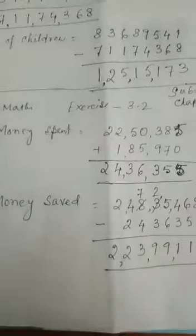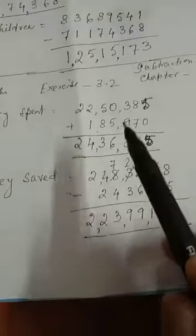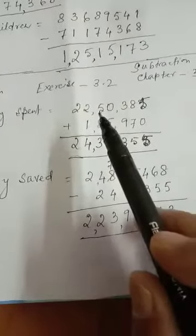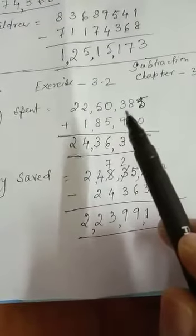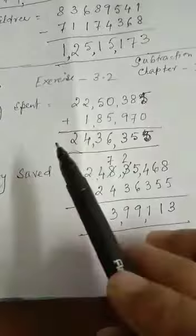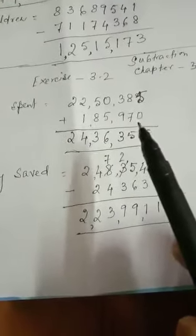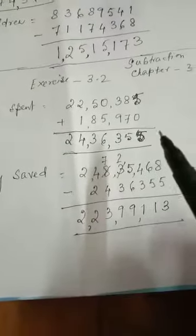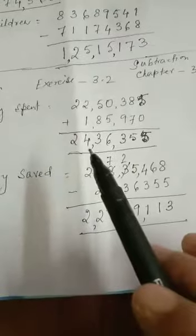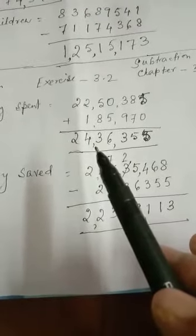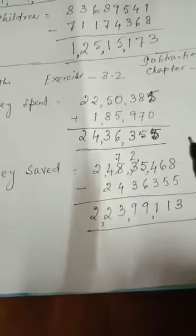Money spent is equal to 22,50,385 plus 1,85,970. So, when you add here, the total comes 24,36,355.